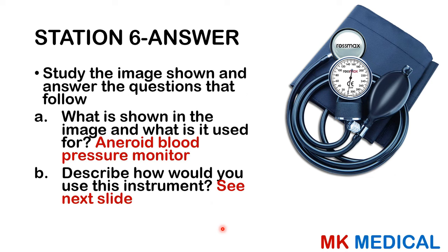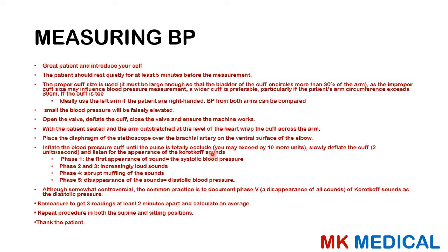This is an aneroid blood pressure monitor — it includes a stethoscope — and it is used to measure blood pressure. To use it: greet and introduce yourself to the patient, gain consent: 'Hi, my name is Moses, I've been asked to take your blood pressure — is that okay with you?' Then ask if the patient has rested quietly for at least five minutes before taking the measurement.